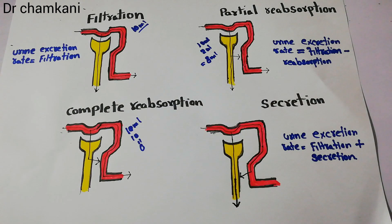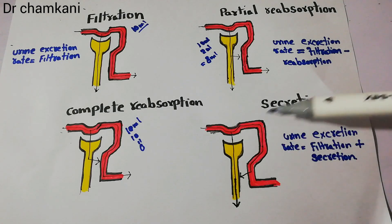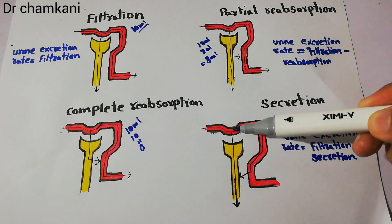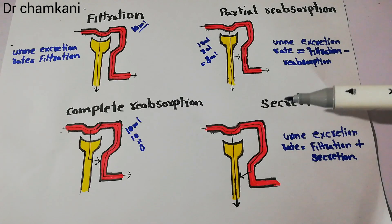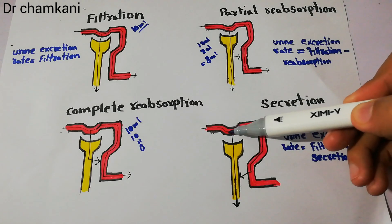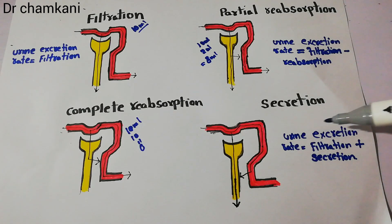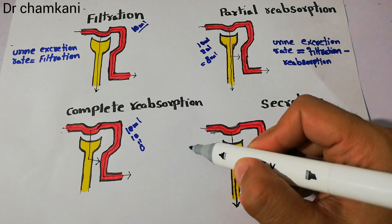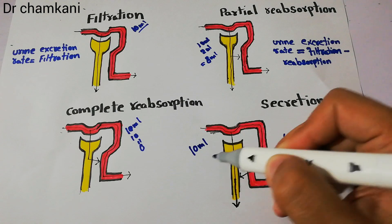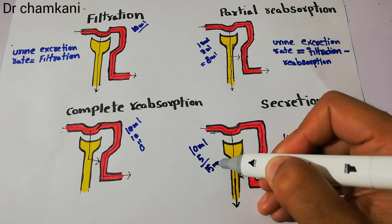Some components of blood, especially hydrogen ions, are not only filtered but are also secreted. They are filtered at the glomerulus, and additionally some part of that substance is secreted from the blood vessel into the tubule. Filtration occurs at the Bowman's capsule while secretion occurs at the level of the renal tubules. For such substances, urine excretion rate equals filtration plus secretion. If 10 ml is filtered and 5 ml is secreted, the urine excretion rate will be 15 ml.